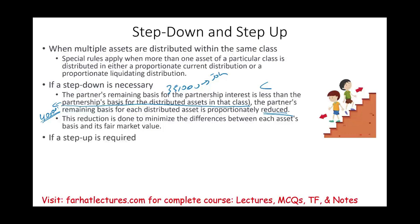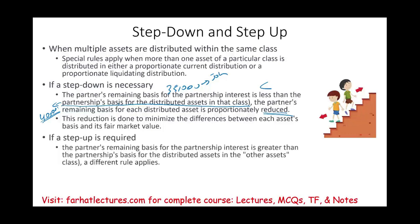We could also have a step-up — we're going to look at an example with a step-up, but the same concept will apply. Here, the partner's remaining basis is greater than the partnership basis for the distributed asset in the other asset class. Other asset means not cash and not hot assets — not inventory or receivable. A different rule would apply.